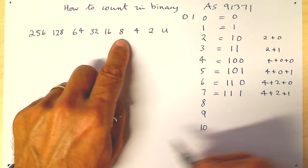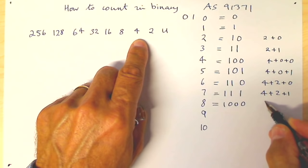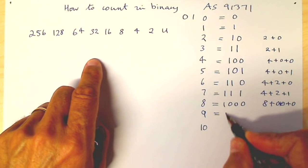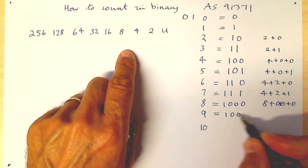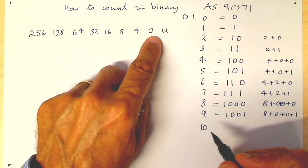And we go into 8, so we've got an 8, no 4s, no 2s, no units. 9 will be an 8 and a 1. And 10 will be an 8 and a 2.